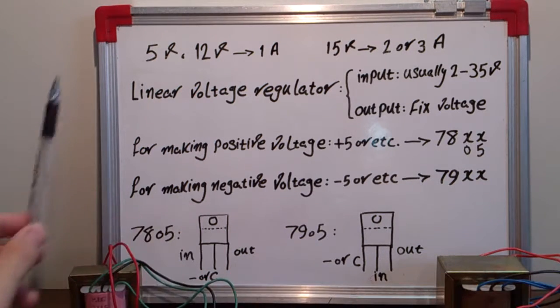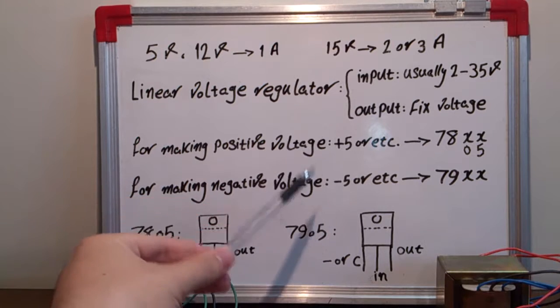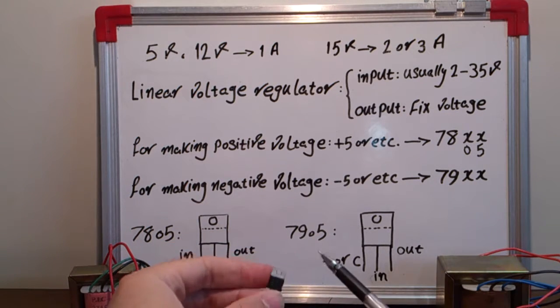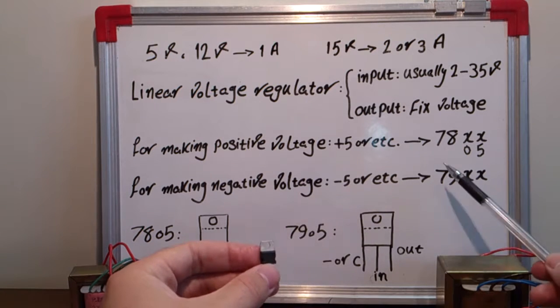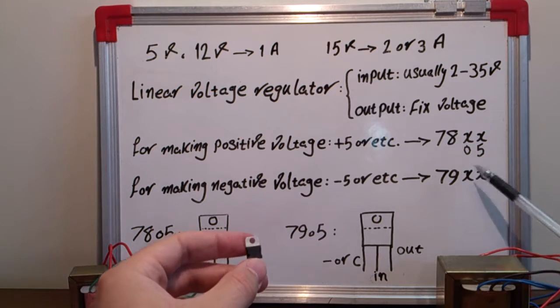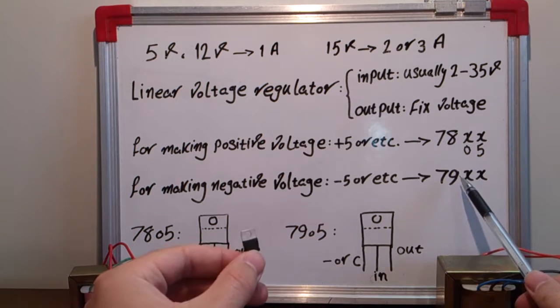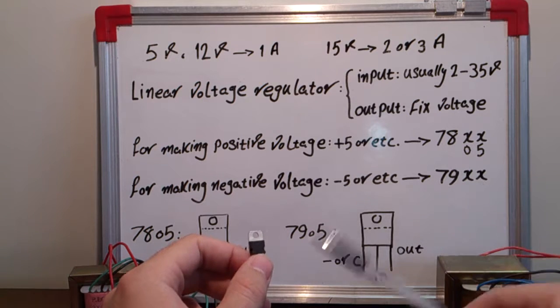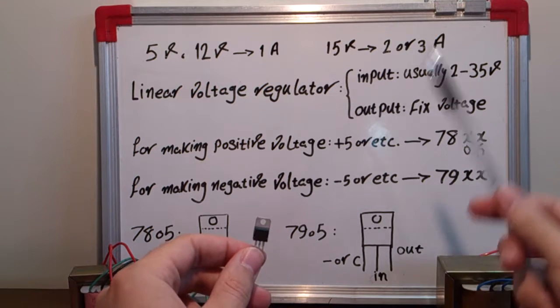If we need to make a negative voltage for our circuit or anything else, for making a negative voltage we need to use another kind of regulator that starts with 79XX. A 79 regulator, like 7905 regulator, always outputs negative 5 volts.